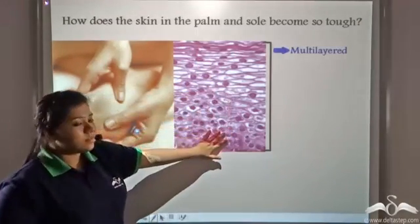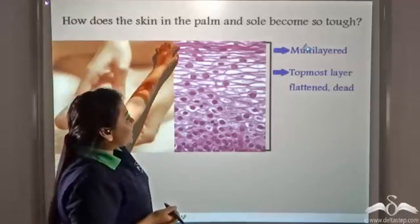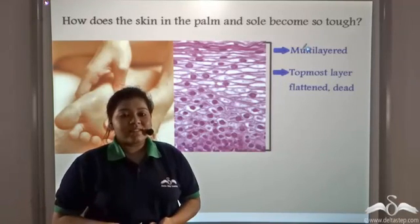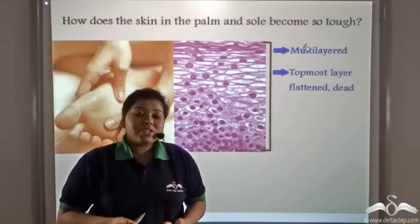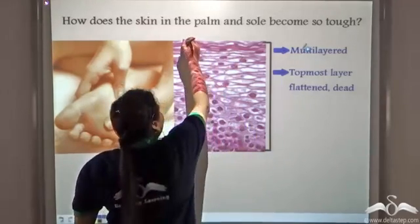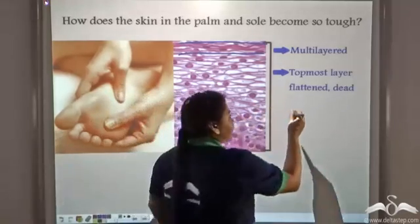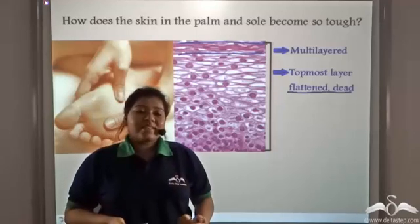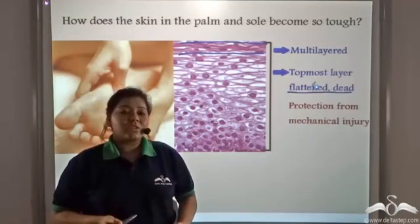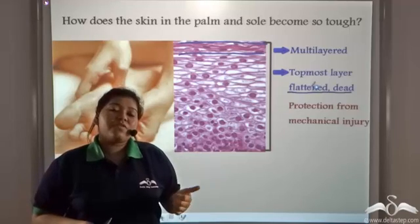Notice the topmost layer — it consists of flattened cells. Flattened cells indicate the lack of cytoplasm and all cellular organelles. If there are no cellular organelles, the functions of the cells won't be performed and so the cells are dead. This layer of the multi-layered structure present in your palms and soles consists of flattened, dead cells. But these dead cells become toughened and hardened, and so they provide protection against mechanical injury to our feet and hands.